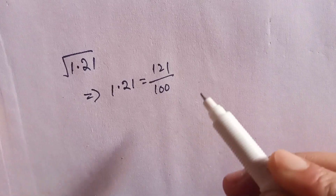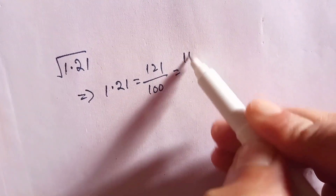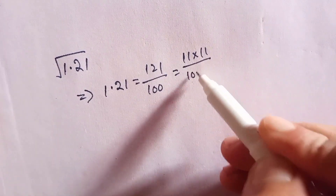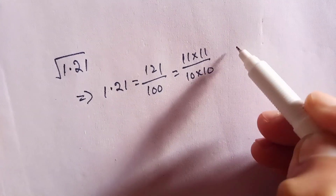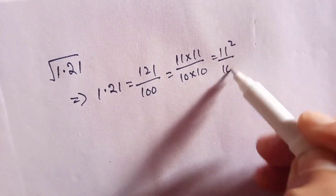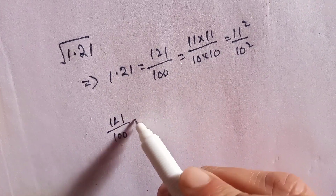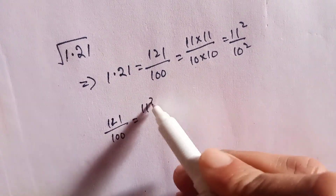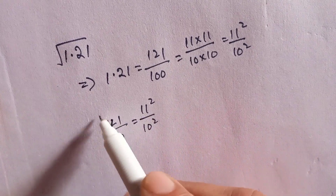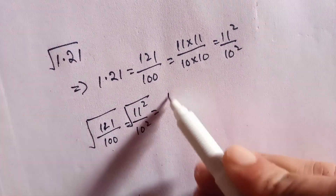Now we will factorize 121, which is equal to 11 times 11, divided by 10 times 10. This is equal to 11 squared over 10 squared. So we can write 121 over 100 is equal to 11 squared divided by 10 squared. Now we will take the square root of both sides.